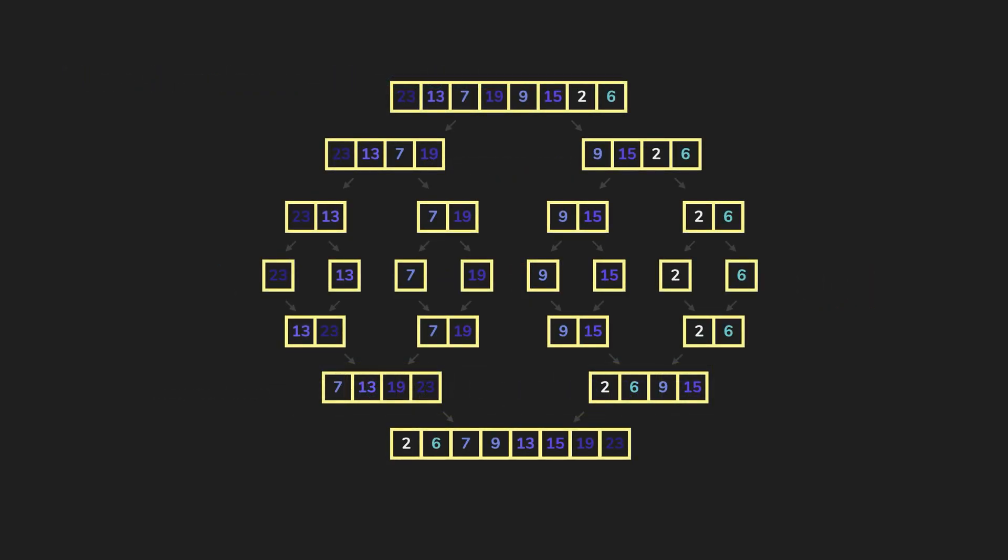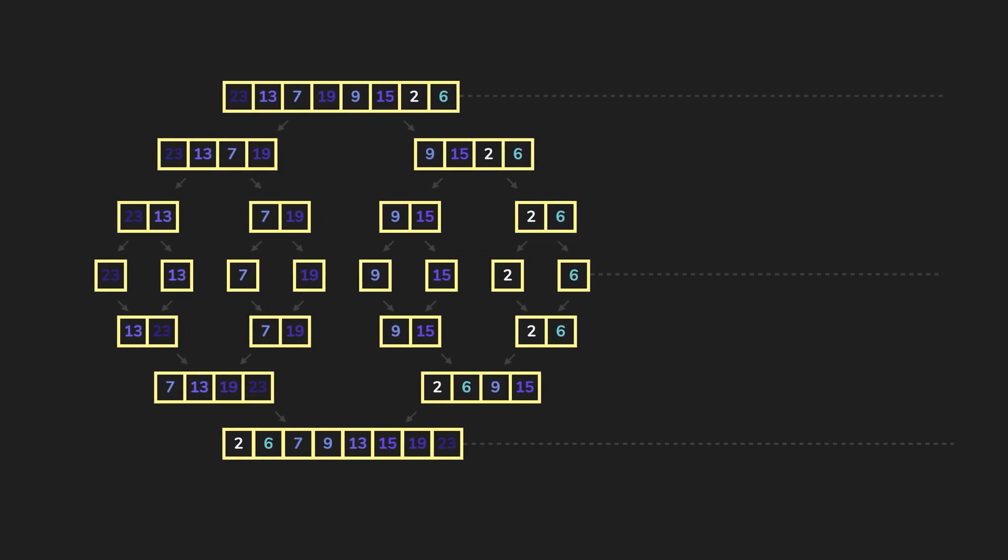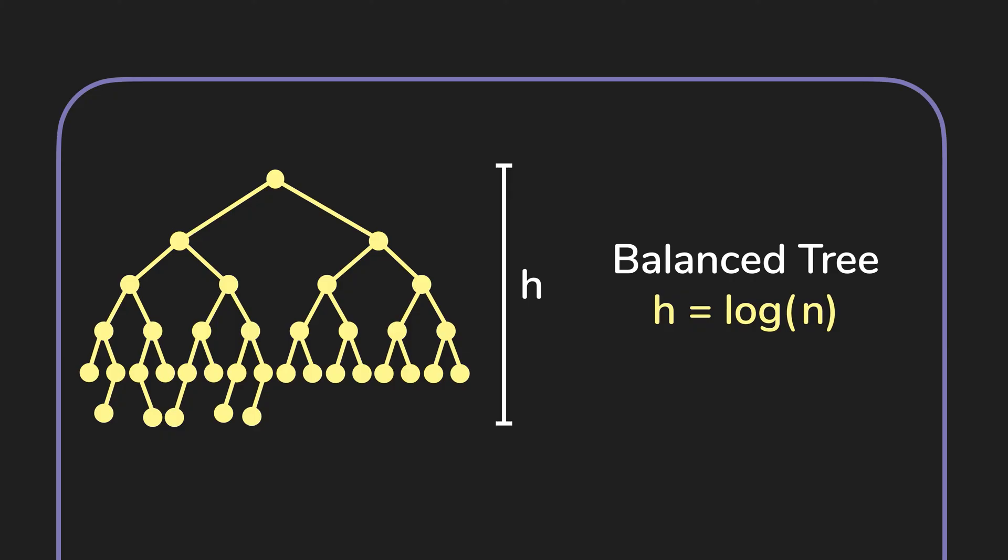To simplify, each stage in this diagram is an O(n) operation. And how many stages do we have? We actually have two times log(n) stages because we are dividing the array in each stage, just like the height of a balanced tree.